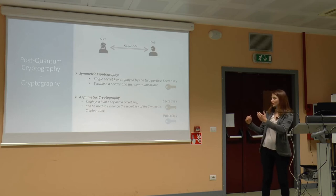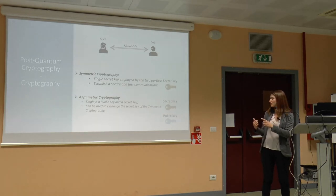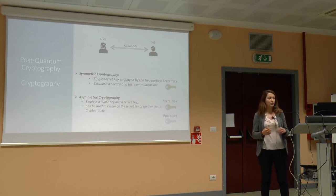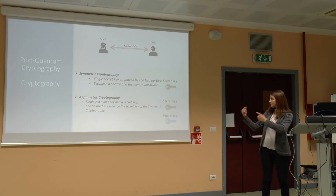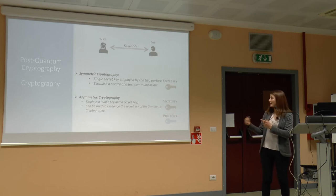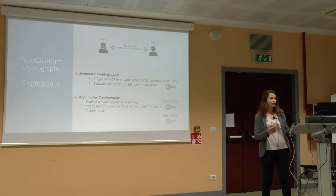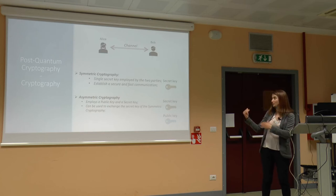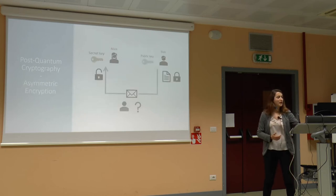For this reason, asymmetric cryptography is necessary. In asymmetric cryptography, we have two keys: one secret and one public key, both owned by one person — Alice in this case. The secret key must not be shown to anybody, and the public key can be provided to everybody who wants to send a message to Alice. This is not as widely used as symmetric cryptography because it is slower, but it is important when we have to exchange the key.